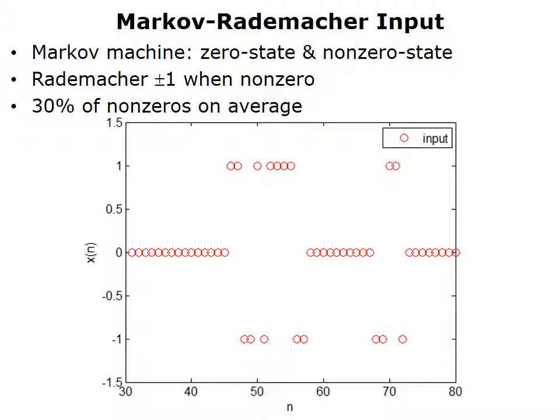Let's see how the algorithm works with the Markov Rademacher input, which has been plotted with red circles. The horizontal axis shows the signal index, the vertical axis shows the signal value, and we can see that the red circles are bunched into groups of zeros and non-zeros. When the signal is non-zero, it takes on Rademacher values of plus one and negative one, and the parameters governing the transitions between the different states — the zeros and non-zeros — are such that the signal is non-zero 30% of the time.